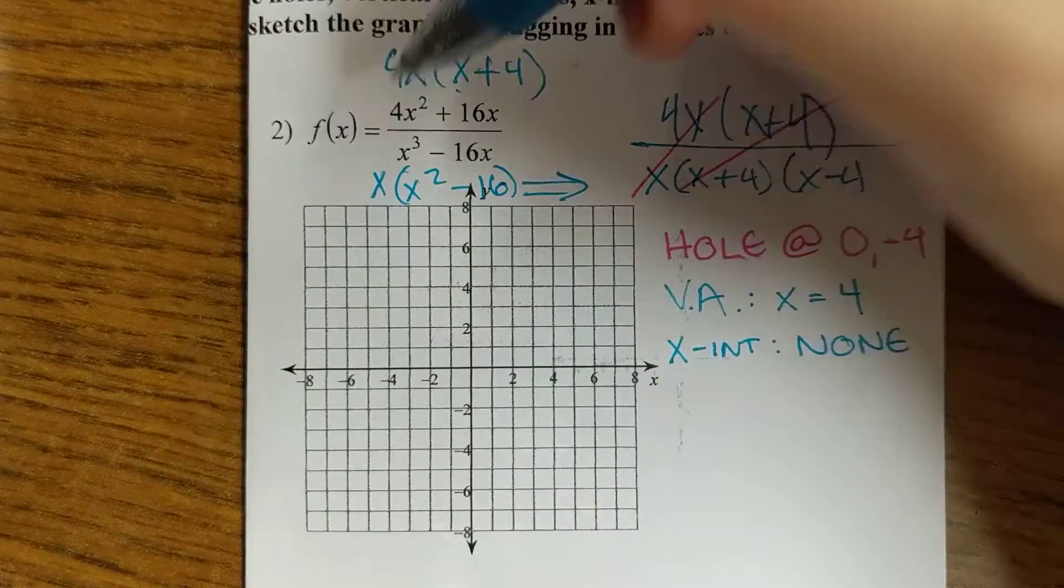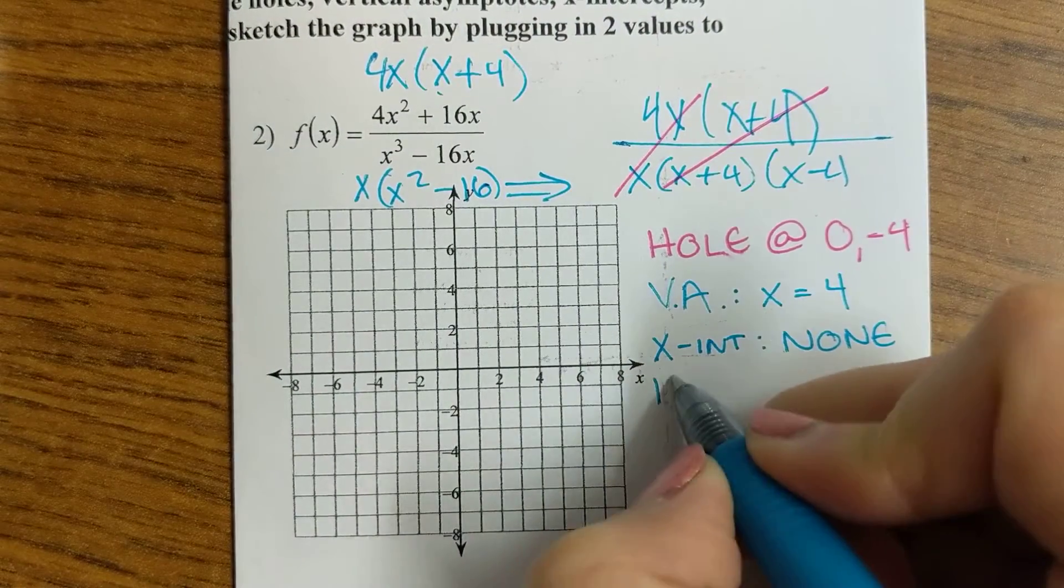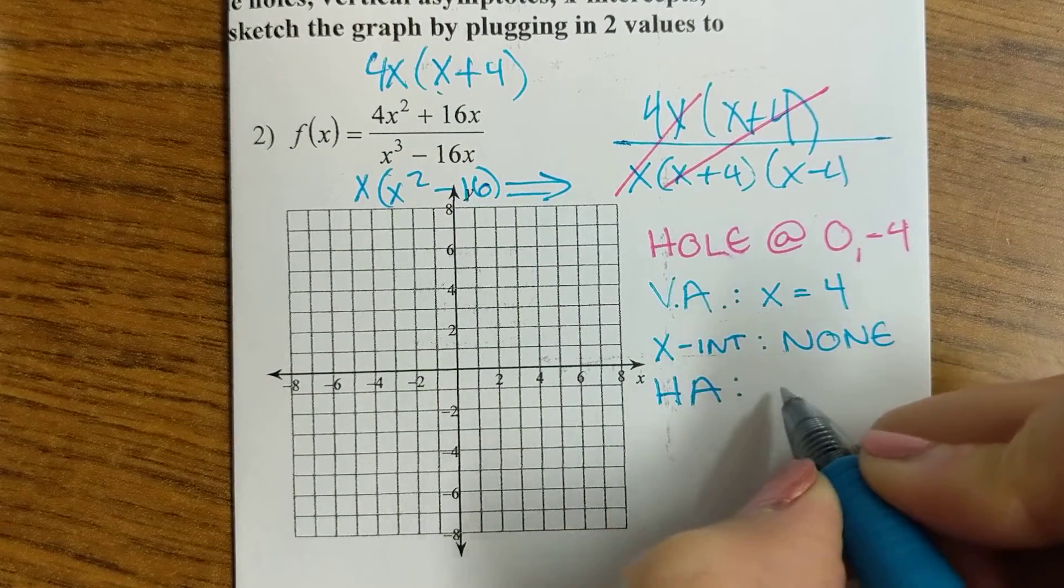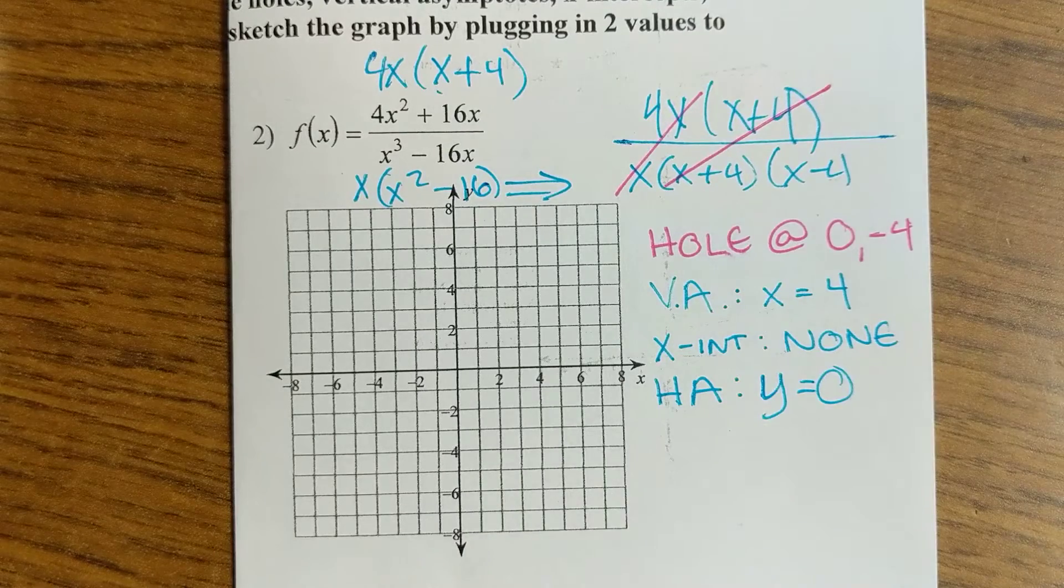All right, the degree of the numerator is less than the degree of the denominator, so there is a horizontal asymptote, and it is at y equals 0.